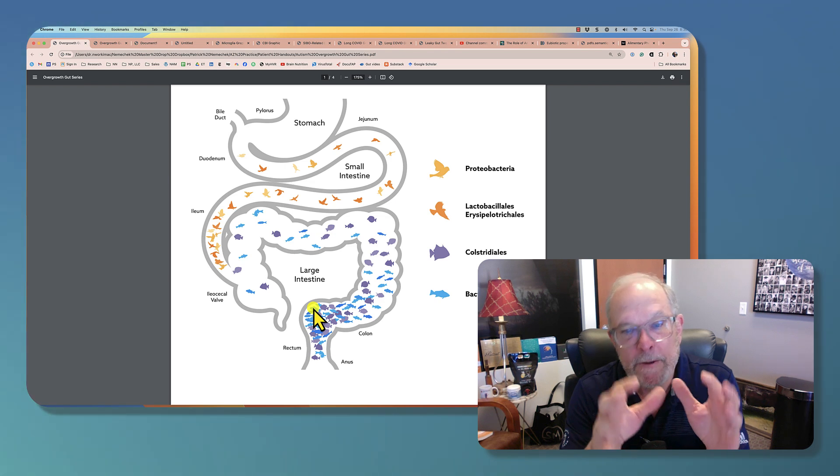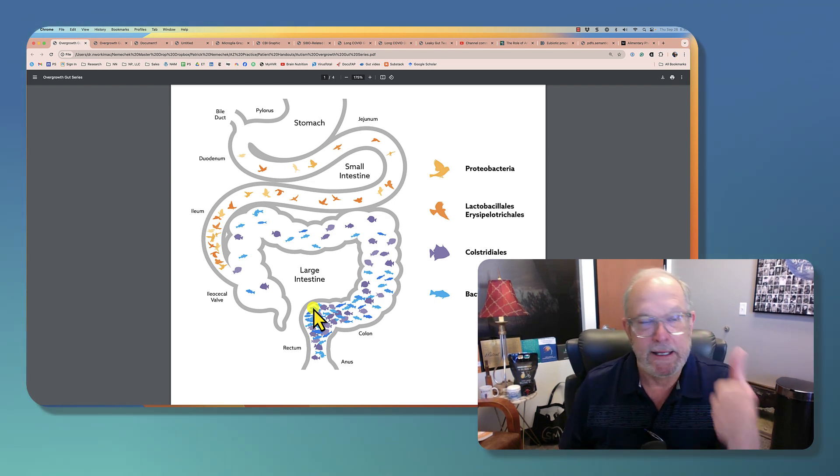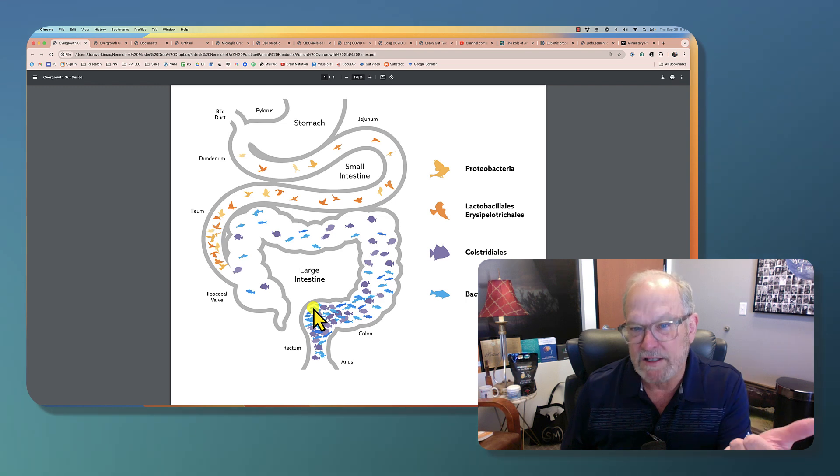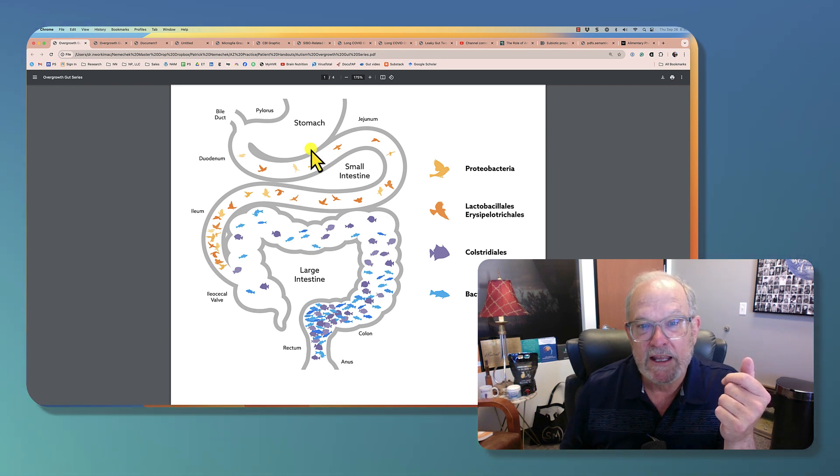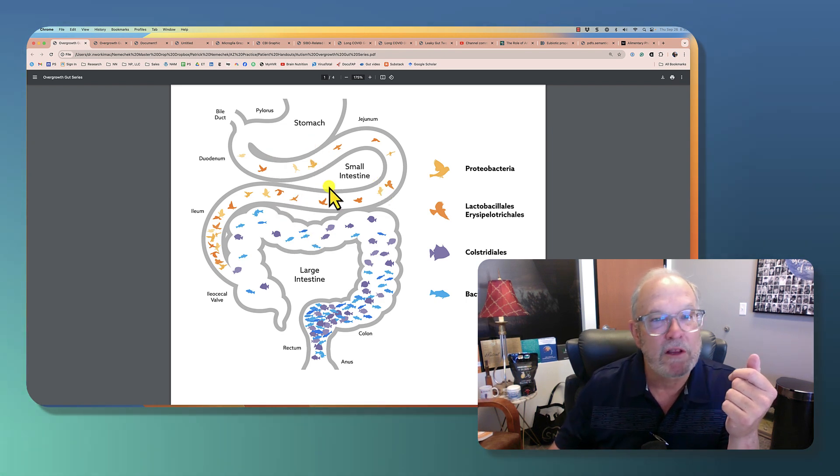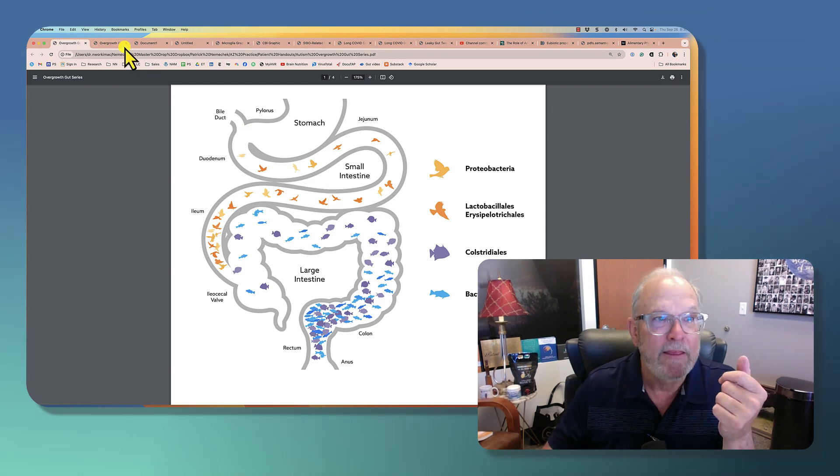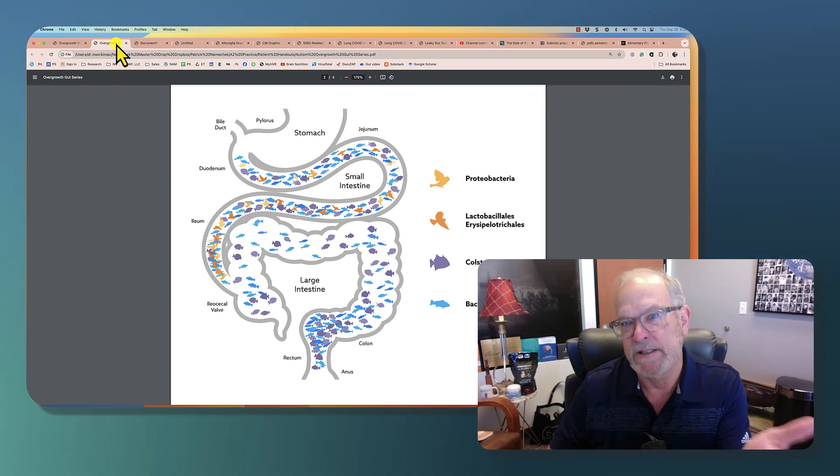So, totality, we got Rifaximin. Doesn't get in the bloodstream, so it won't cause side effects, it won't interact with your other medicines. Two, it only kills the fish, the colobacteria, but it only works in, and it won't kill the birds, but it only works in the small intestine. And literally, the only thing it can do is treat SIBO.